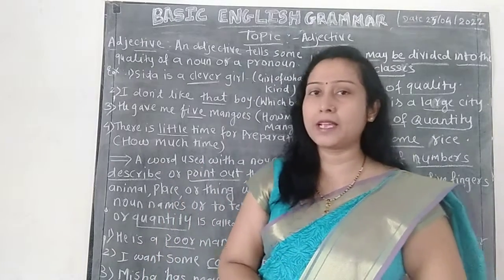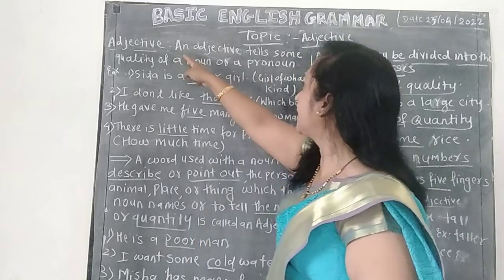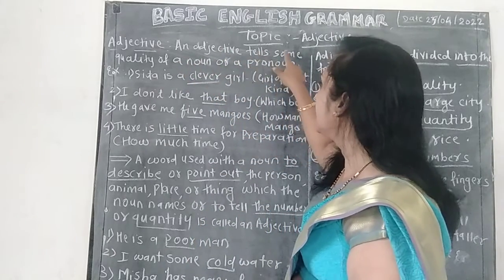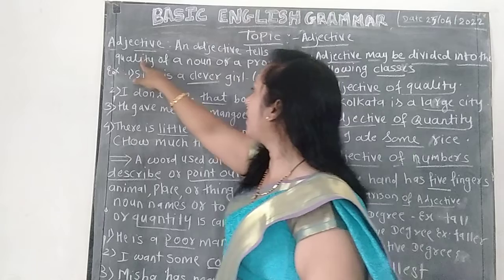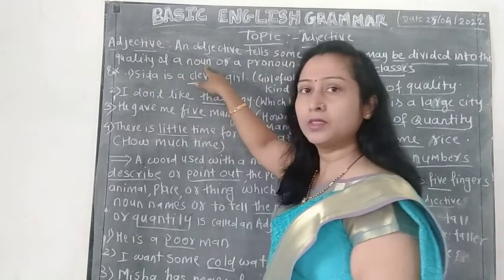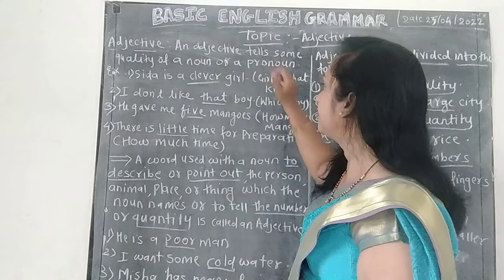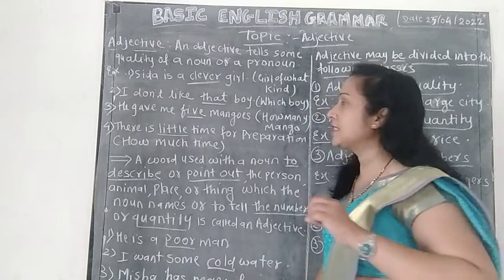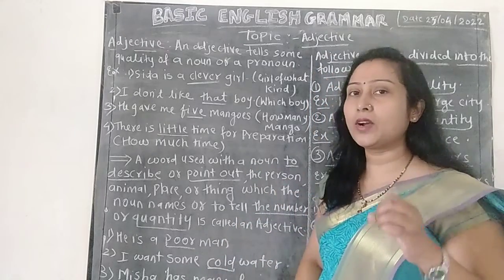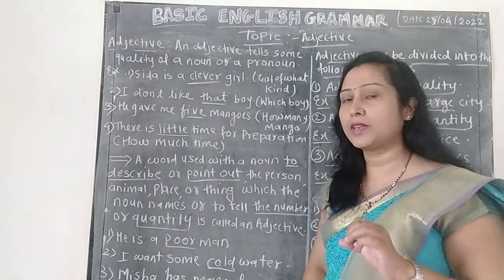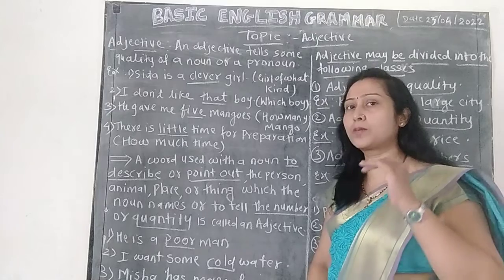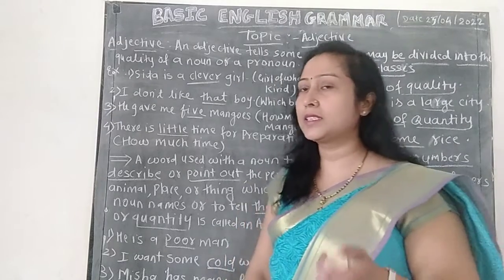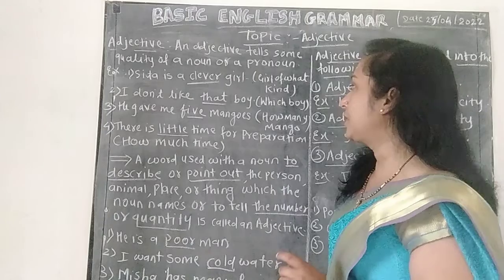What is the meaning of adjective? An adjective tells some quality of a noun or a pronoun. Adjective tells quality of a noun and pronoun — the special information we give about a noun or pronoun is called an adjective.